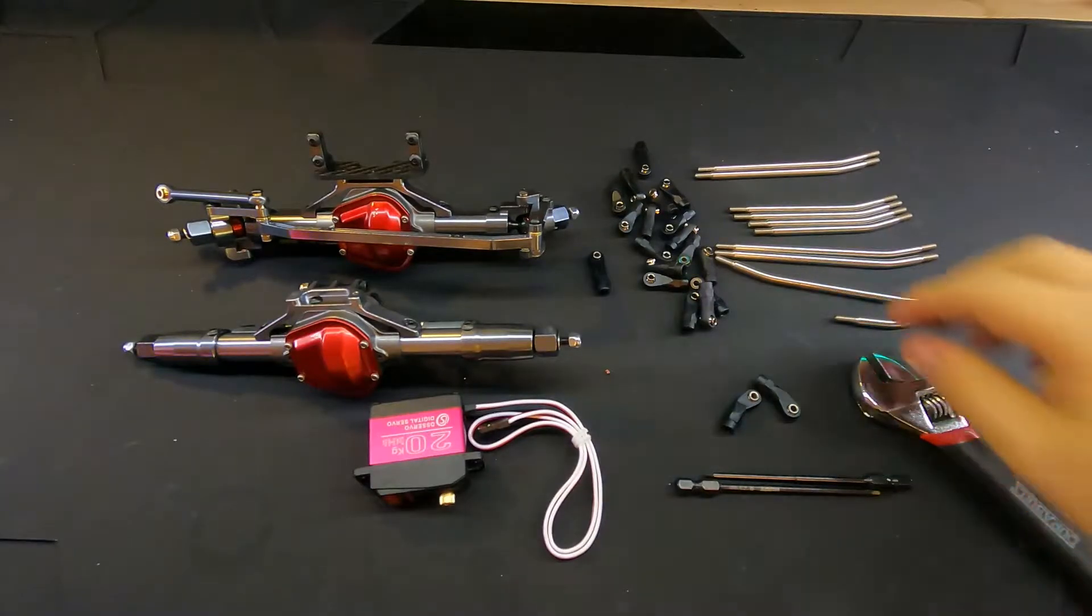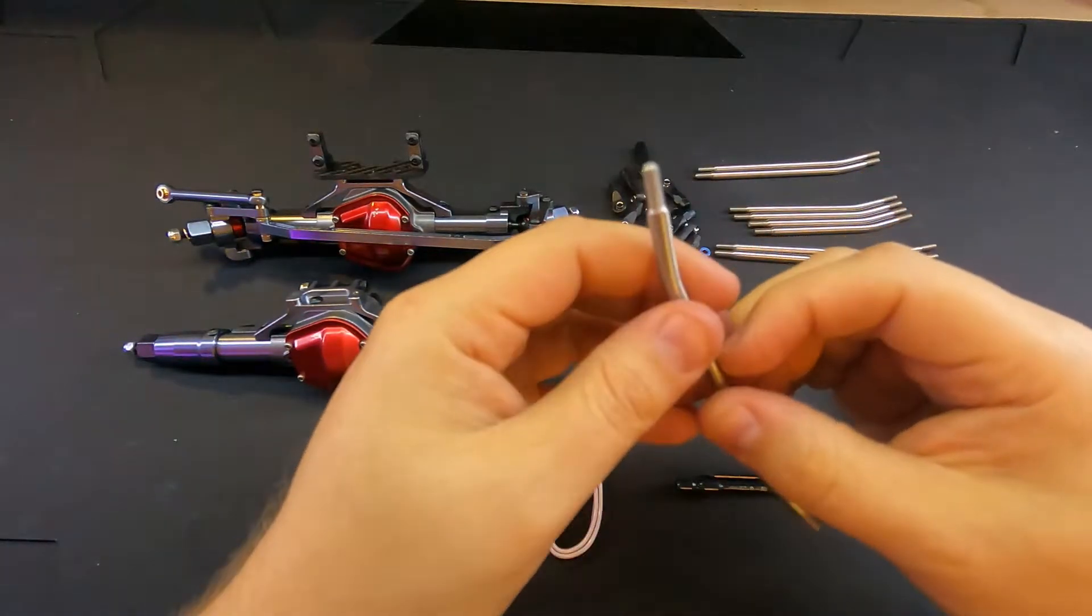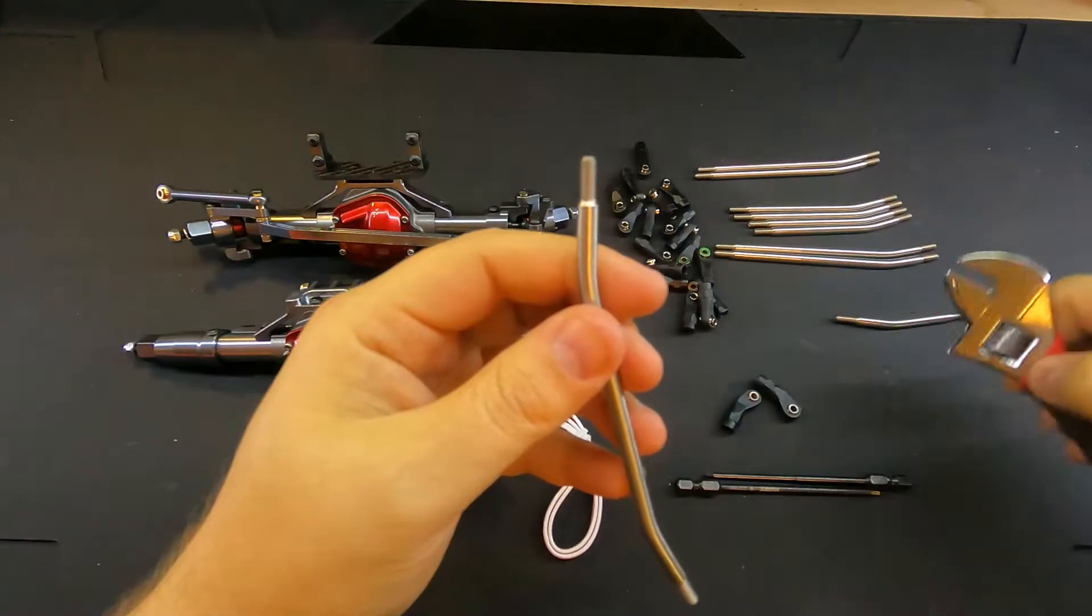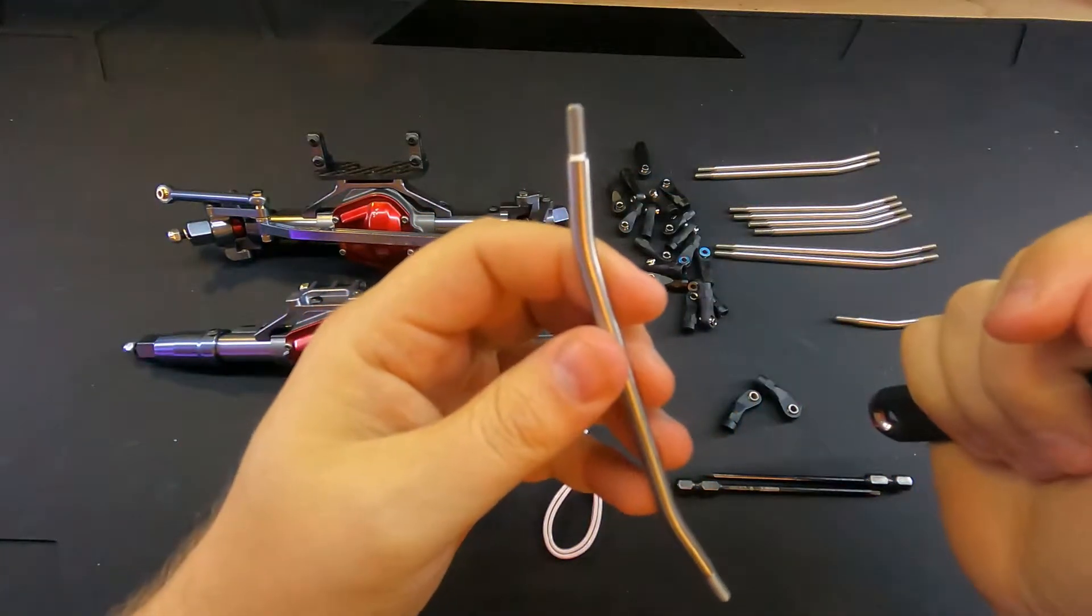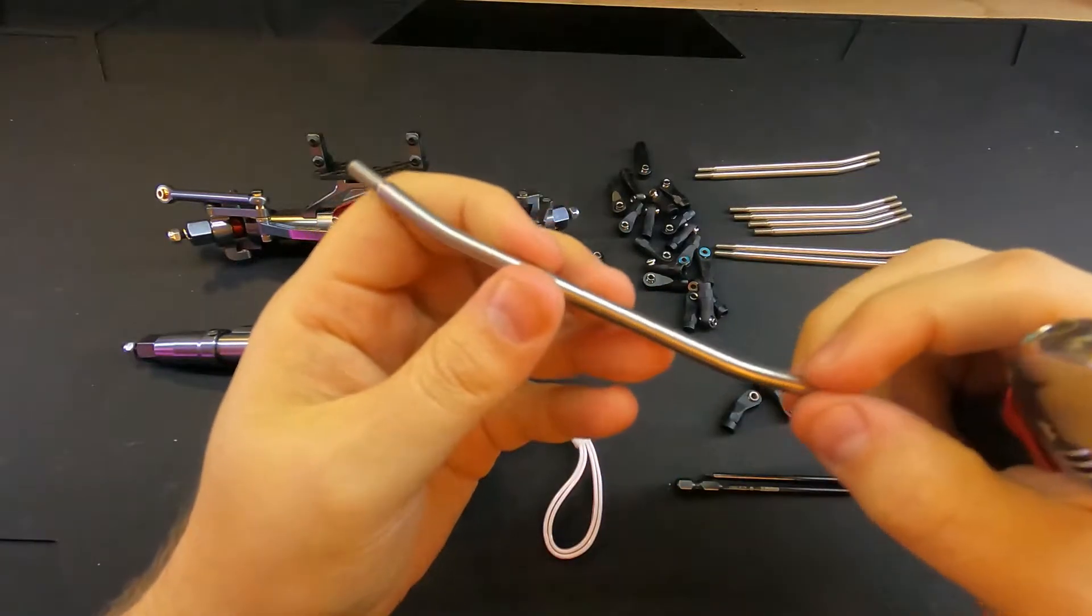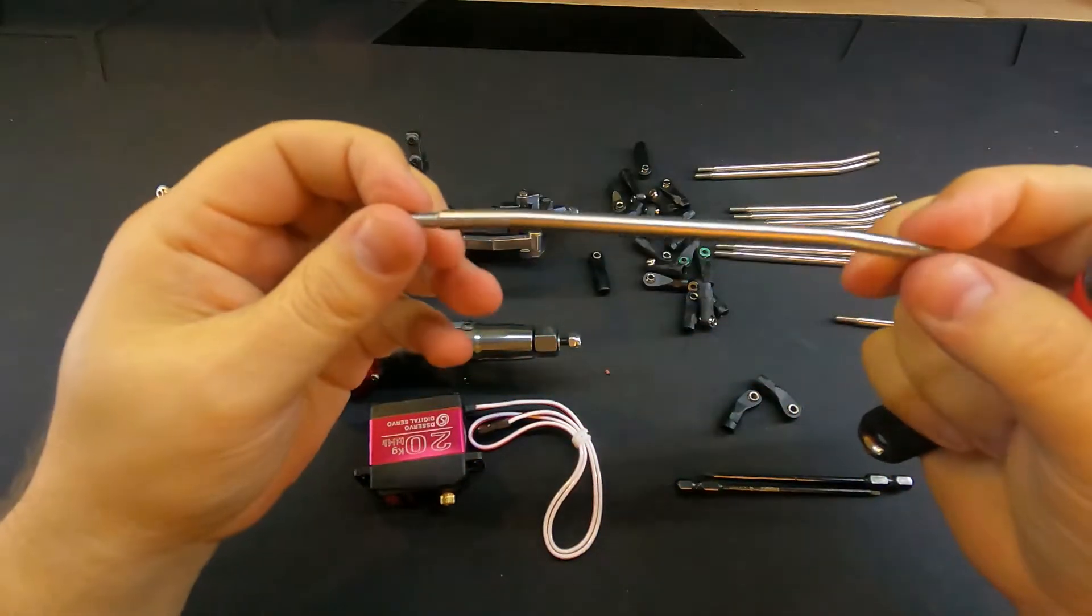I think for the purpose of this video today we'll start by building the links. Now you can use a traditional pair of pliers to hold on to your link while you're threading on your plastic rod end, but that does mar up your link and that's something you want to try to avoid.